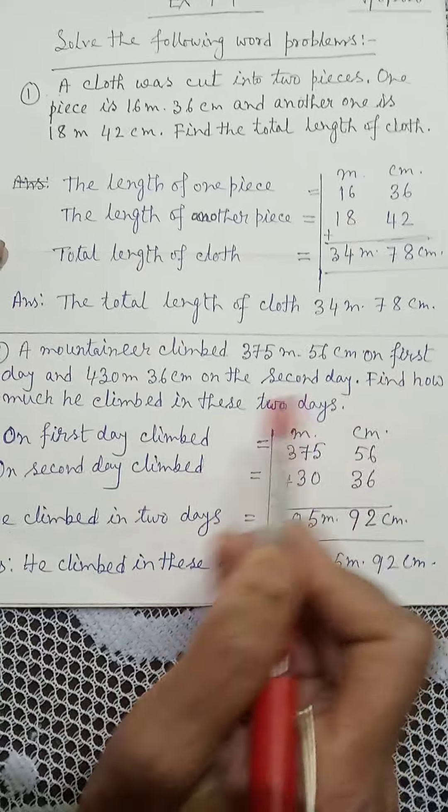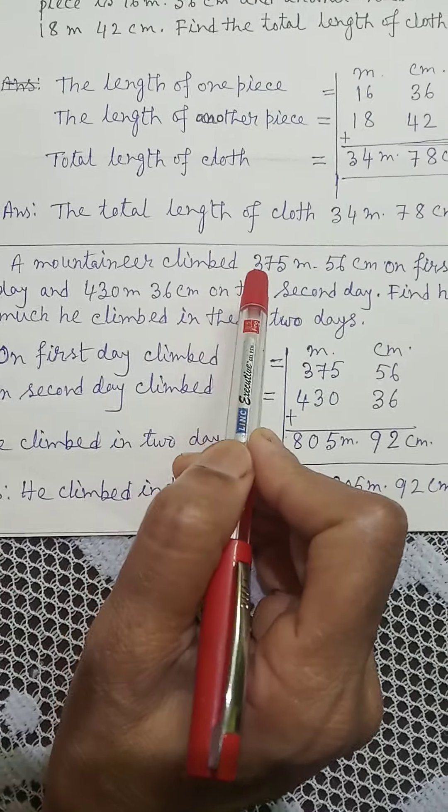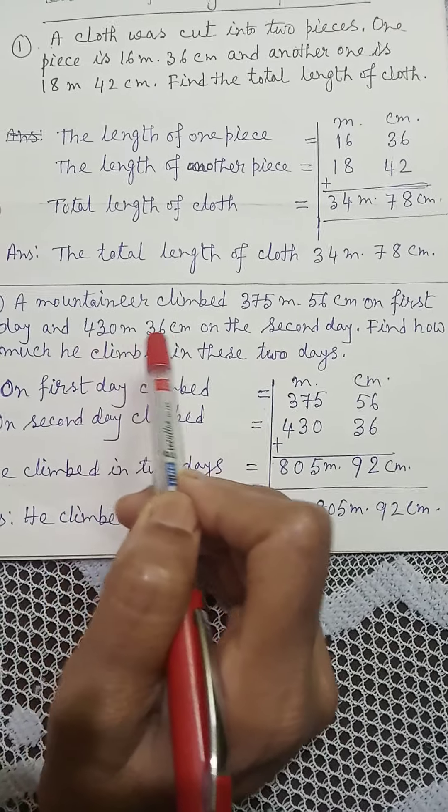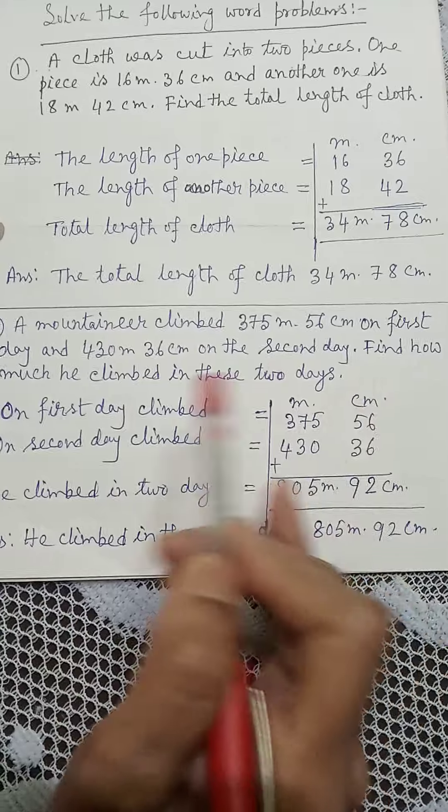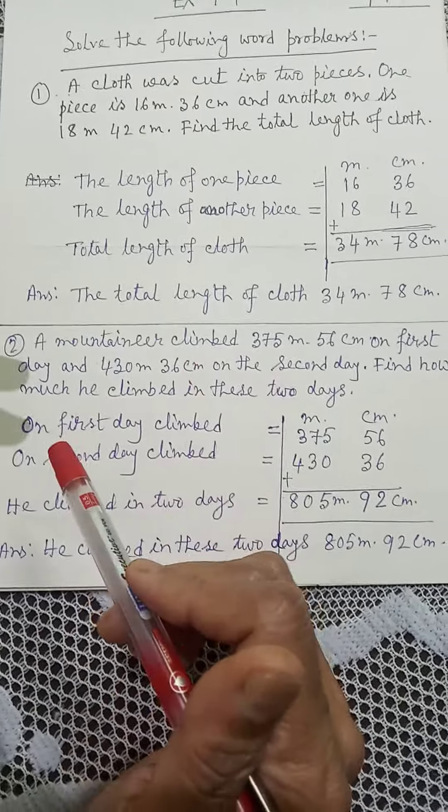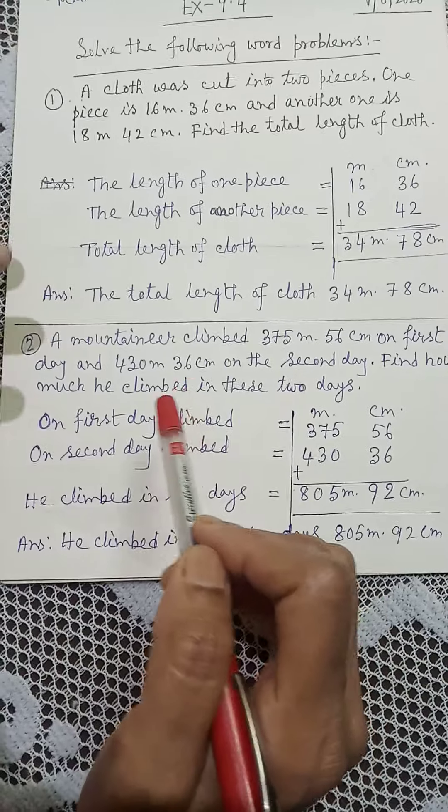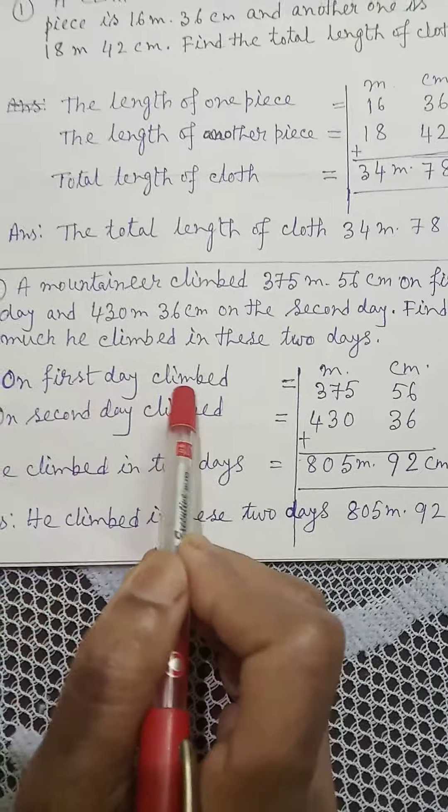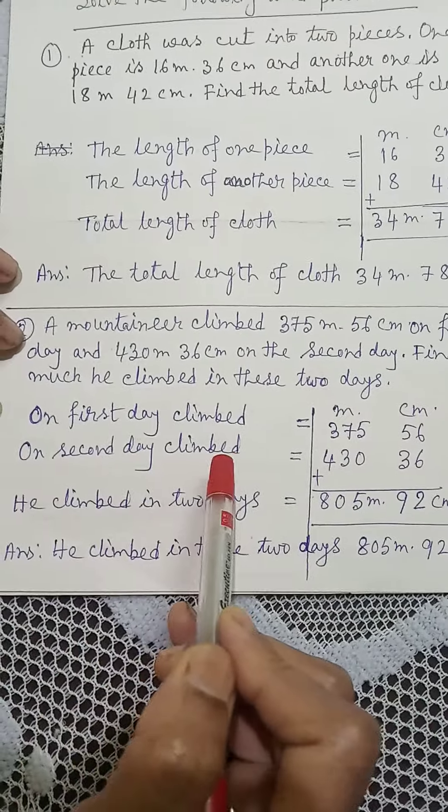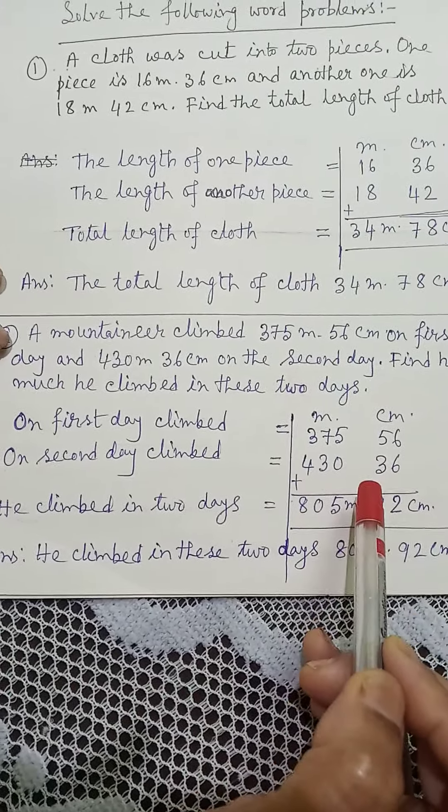Find how much he climbed in these two days. What do we need to do? We need to add. First day how much he climbed and second day how much he climbed, we need to add both. On first day climbed 375 meter 56 centimeter, on second day climbed 430 meter 36 centimeter. We will add both.